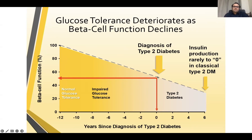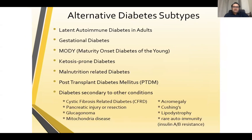In classical type 2 diabetes, insulin production will not go to zero, but it may decrease, and sometimes we just need basal insulin along with oral medications. We should also know about alternative diabetes subtypes: LADA, gestational diabetes, MODY, ketosis-prone diabetes, and post-transplant diabetes mellitus.